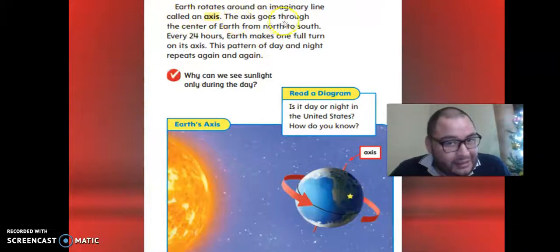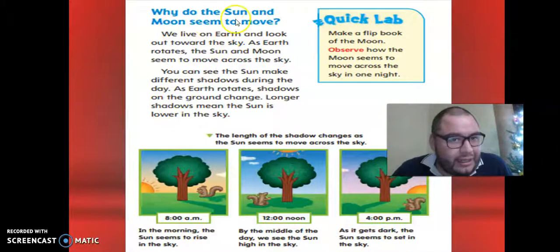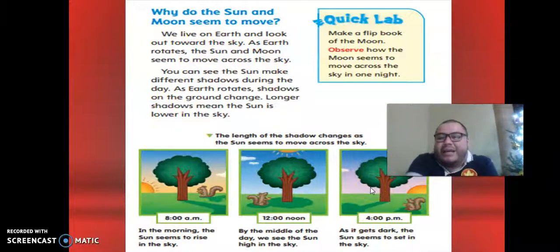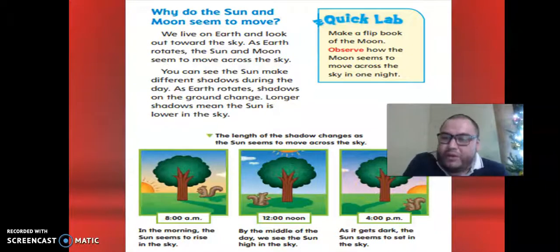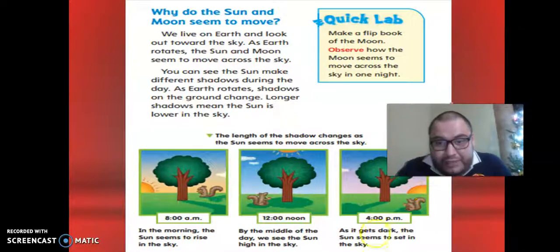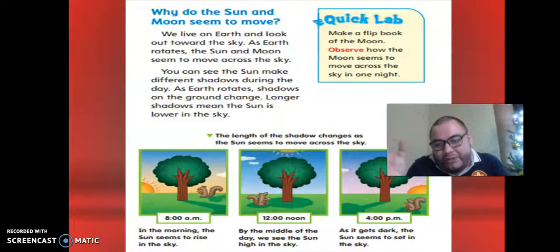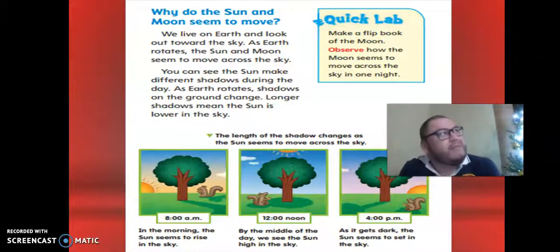The axis goes through the center of Earth from north to south. Every 24 hours. Very good. So what do the Sun and Moon seem to move? How can we see if the day is moving or not? Super easy. You can do it in your house. You can see it, for example, how can we know if the rotation of the planet is happening? How can we see it?